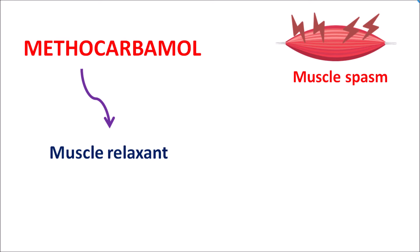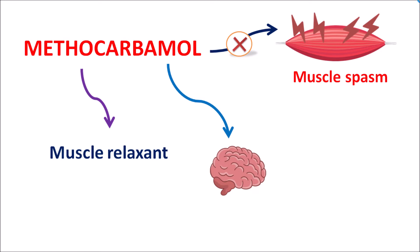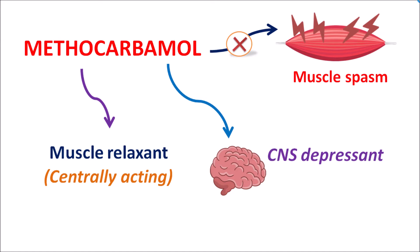Interestingly, this drug is not directly acting on the muscle. Instead it acts on the central nervous system. So methocarbamol is a centrally acting muscle relaxant, and this drug acts as a CNS depressant. Thereby it can reduce muscle contraction, muscle stiffness, as well as pain associated with severe muscle spasm.